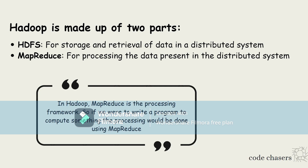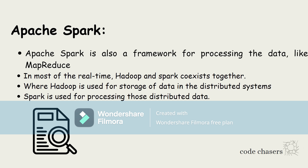Now we will keep Hadoop and MapReduce aside and learn about Apache Spark. Apache Spark is also a framework for processing data. Just like MapReduce, we can use Apache Spark for processing data. In most real-time scenarios, Hadoop and Spark coexist, where Hadoop is used for storing the data and Spark is used for processing that distributed data.